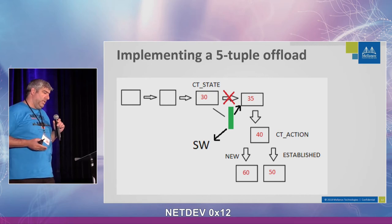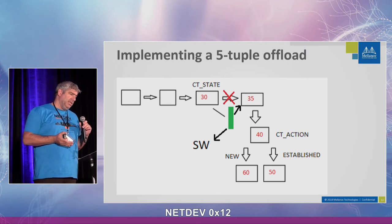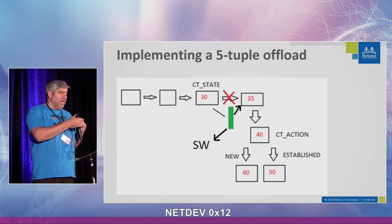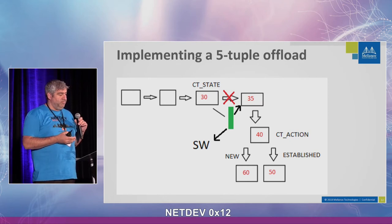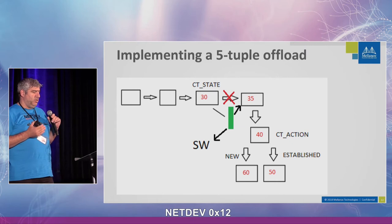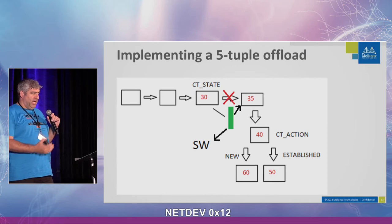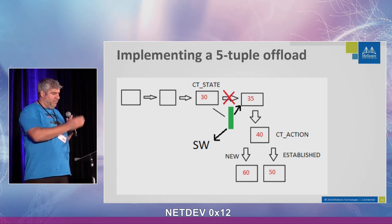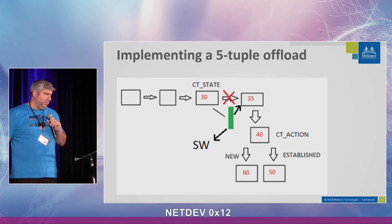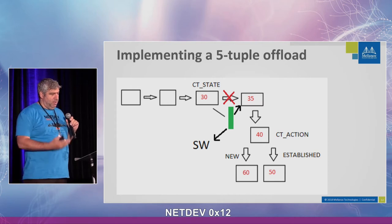Then we see another match happening inside the hardware — a match on the connection state. Because we already found it in the green box via the five-tuple match, we know the state of this connection. We have some metadata on the packet that tells us the state. So we can continue parsing according to this metadata. If it's established, we can continue and apply the other rules as configured by TC.